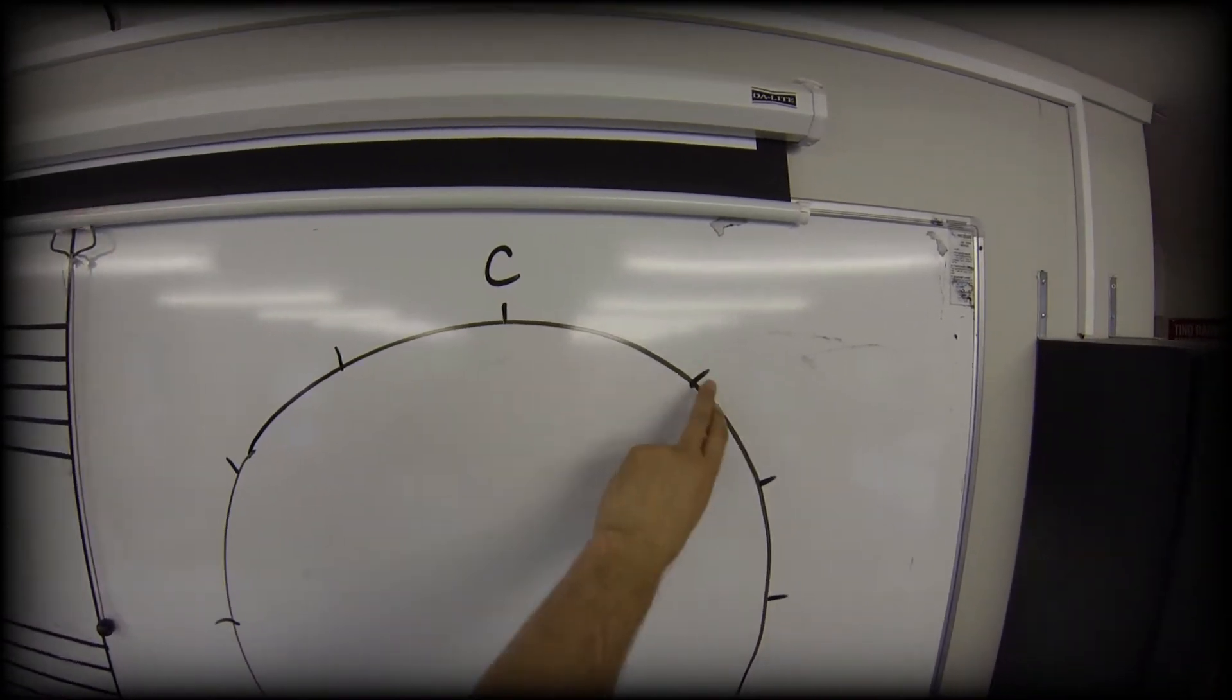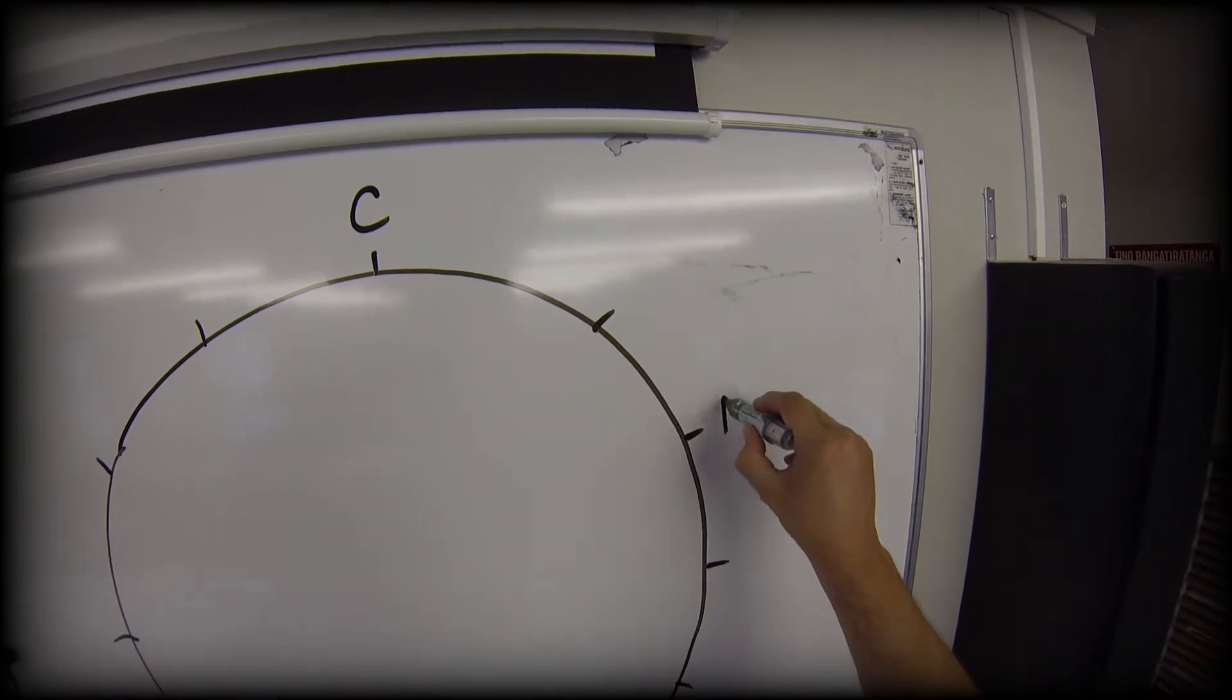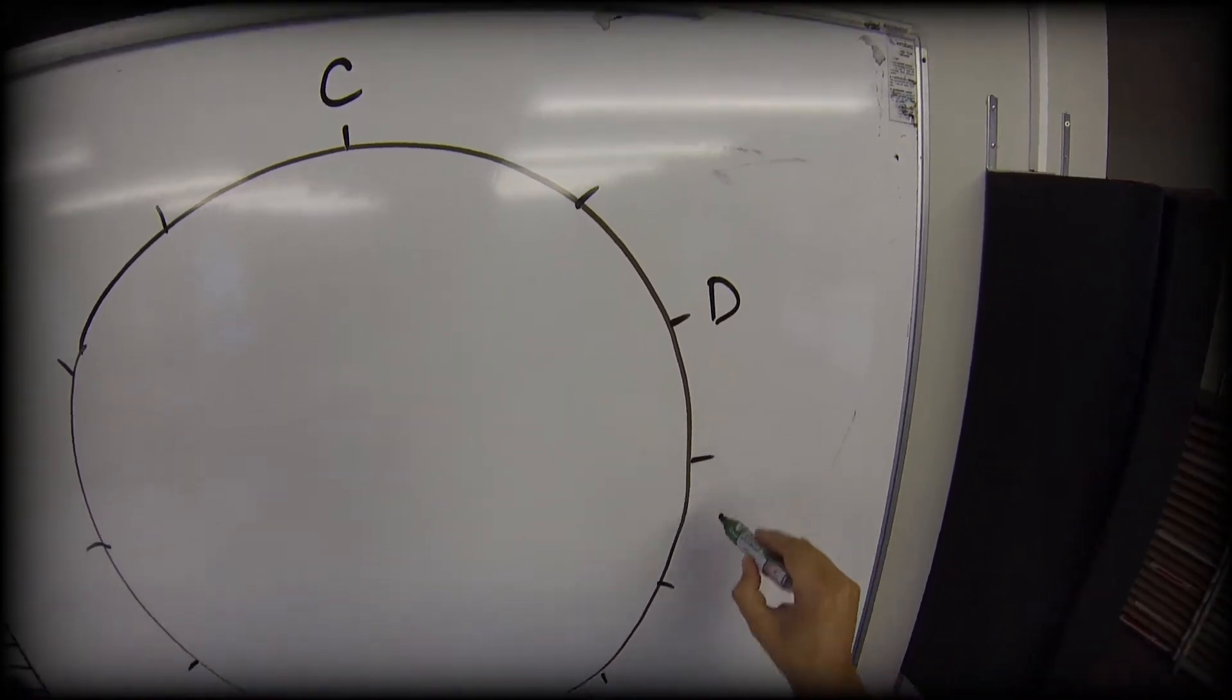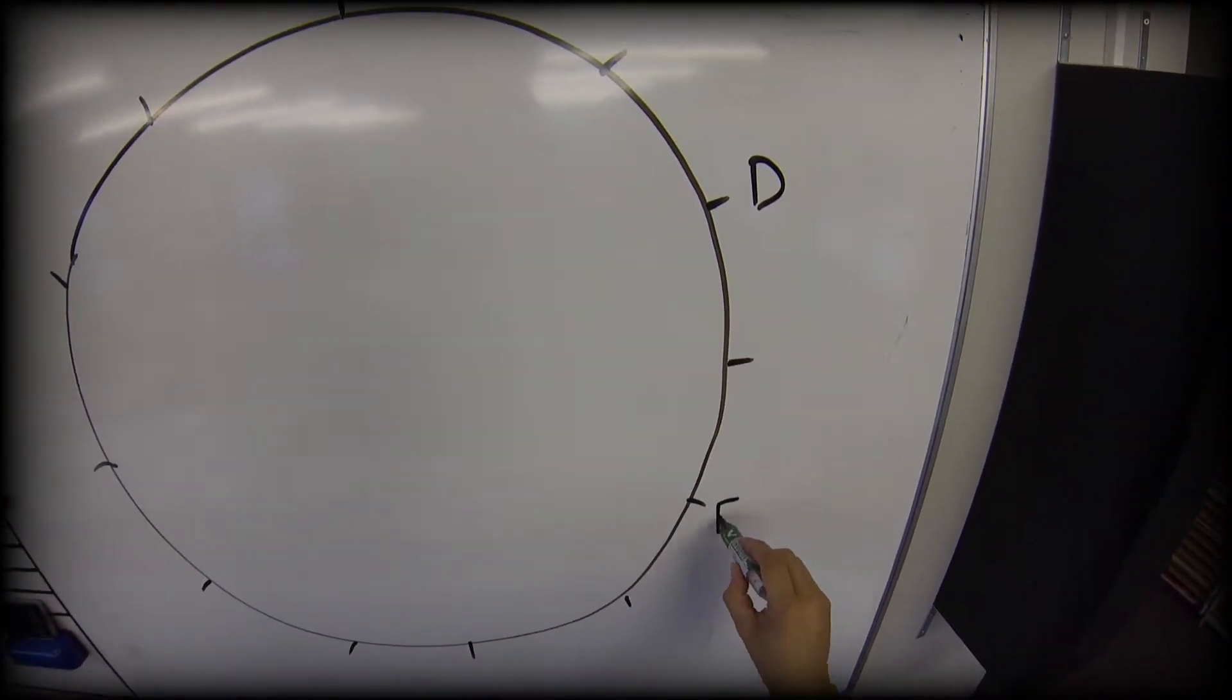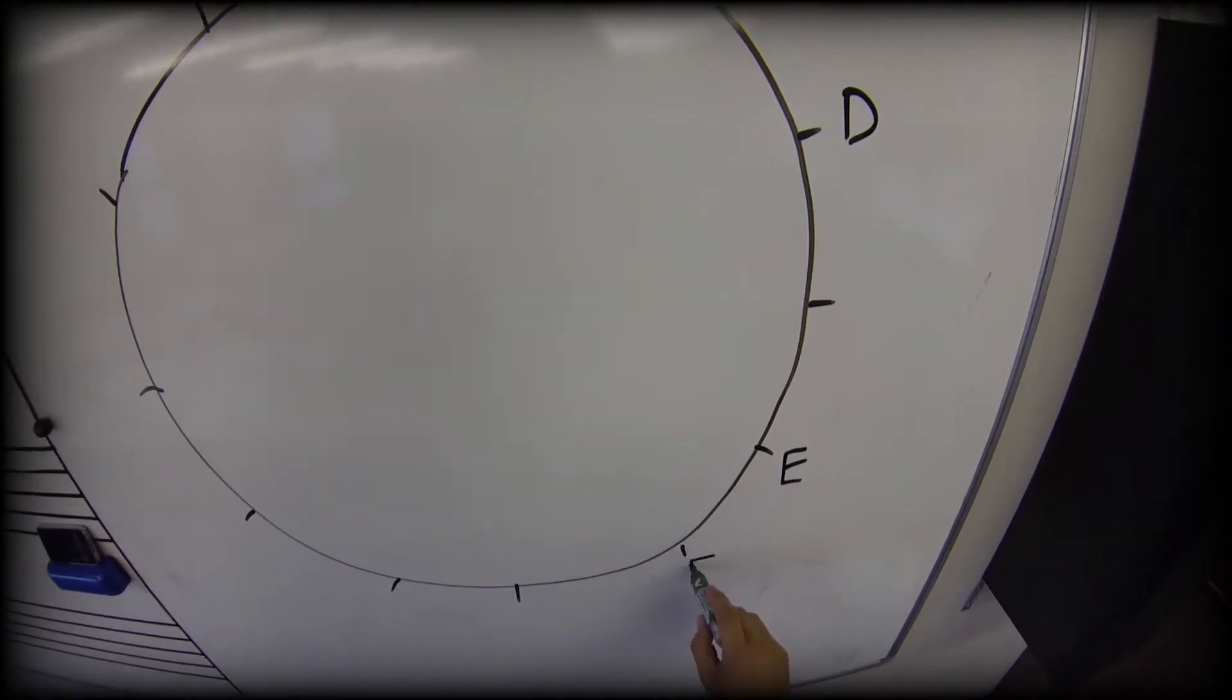So we've got C, we're going to go two steps to D, we're going to go two steps to E, we're going to go one step to F.